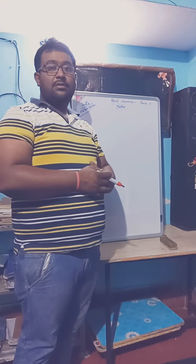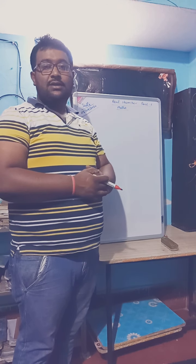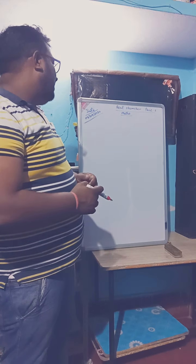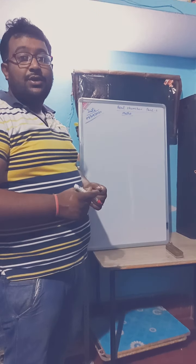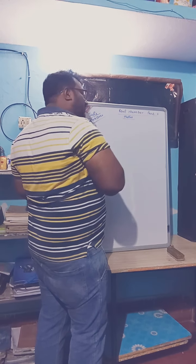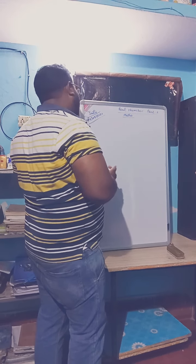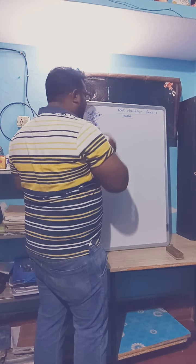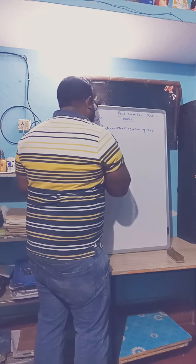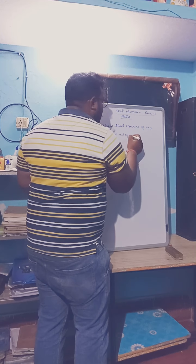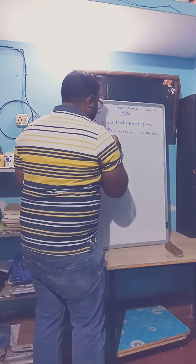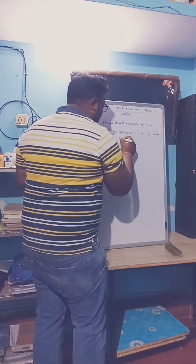Hi students, this is my third video on real numbers. In this section we are discussing the use of Euclid's Division Lemma to solve theorem-type questions. We will use Euclid's Division Lemma to solve the problem. The question is: show that the square of any positive integer is of the form 3m or 3m plus 1.